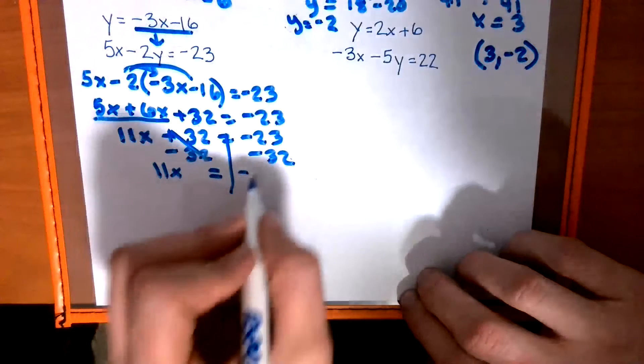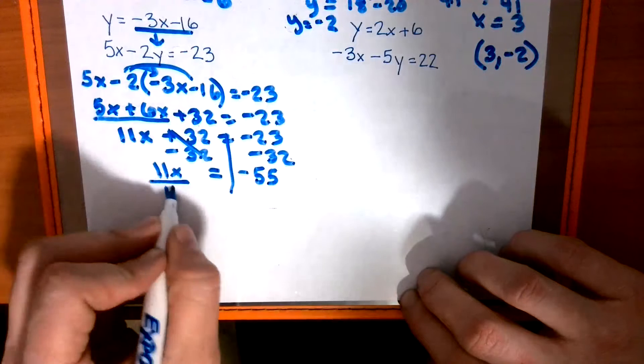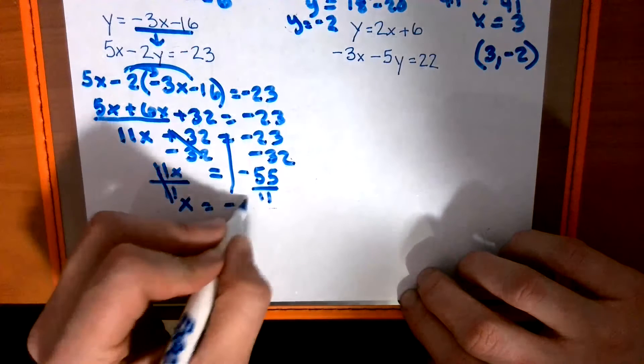Multiplying, we're just adding, combining like terms. 30, 40, 55, minus 55, negative 55. 11x equals negative 55. Divide by 11. x equals negative 5.